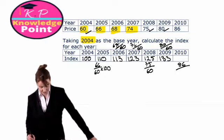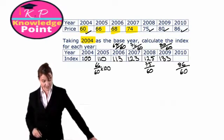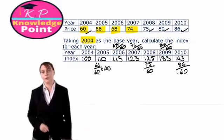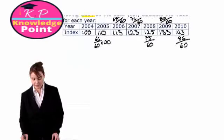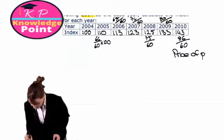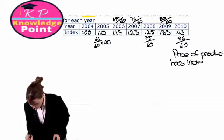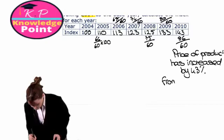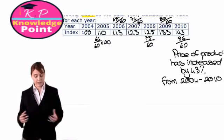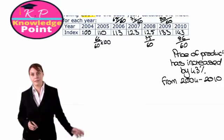And finally, 2010, our price is 86 divided by 60, multiplied by 100, giving us 143. So what our index number tells us is that the price of the product has increased by 43% from 2004 to 2010. And that's all that's involved in our straightforward index numbers calculations.